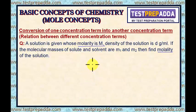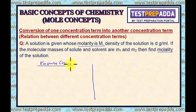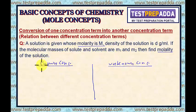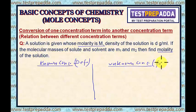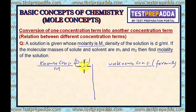In this method, you draw a vertical line. On the left-hand side, you write the known concentration; on the right-hand side, you write the unknown concentration. For the known concentration, use the definition. For the unknown concentration, use the basic formula of that concentration. In this case, molarity is the known concentration, so I will use the definition for molarity. Molality is the unknown concentration, so I will use the formula for molality.